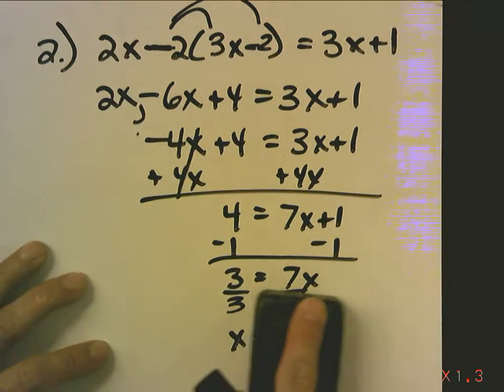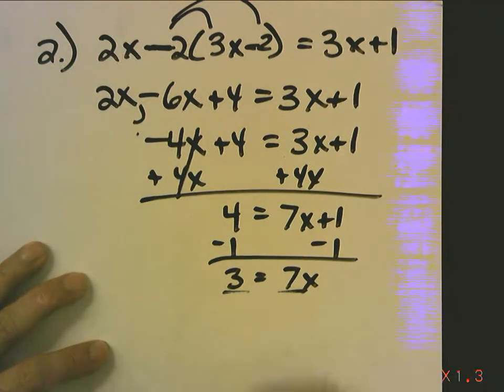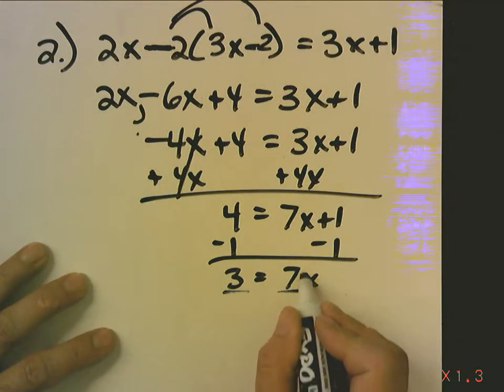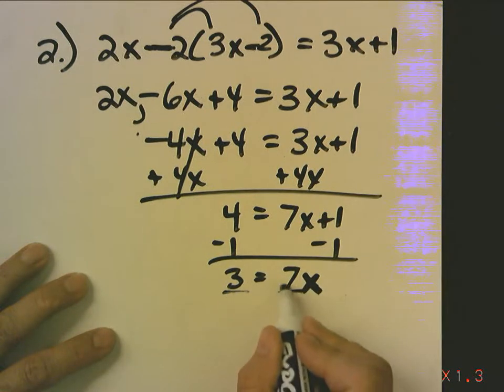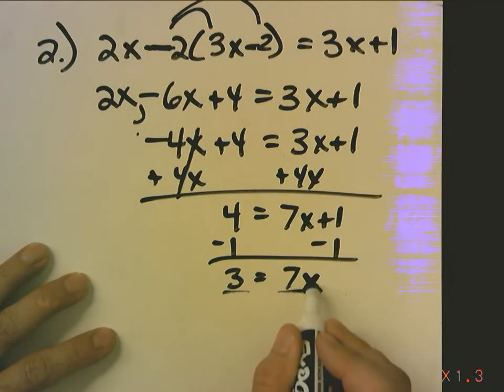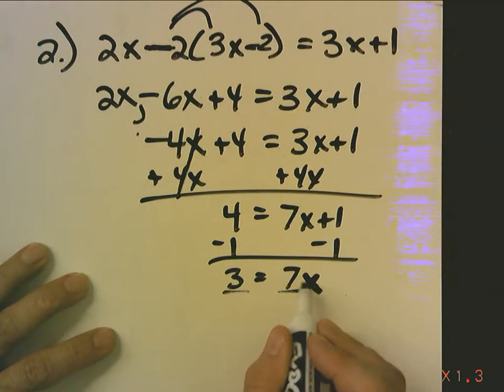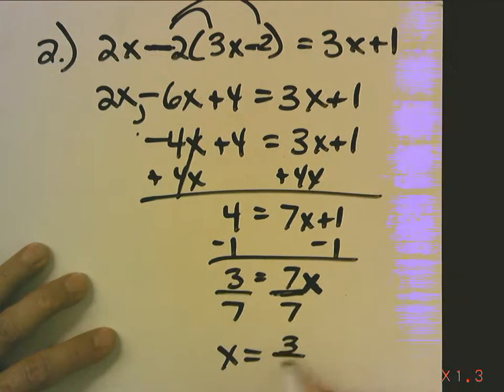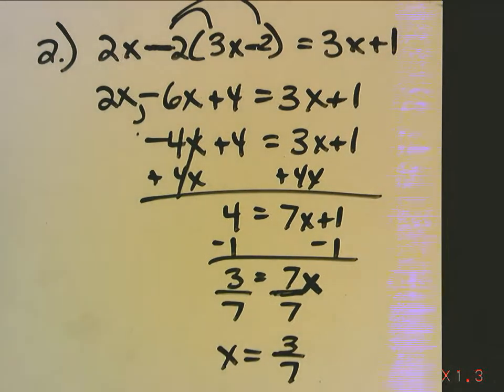What you did wrong was, even though the variable is on the right-hand side, we divide by whatever is multiplying the variable. We want to isolate x. So we want to get x by itself. 7 is multiplying x. To undo that, we divide by 7. So the answer is x equals 3 7ths.